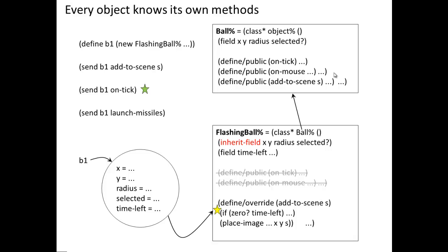If I send that FlashingBall an on-tick message, it will observe that there is no on-tick defined in FlashingBall, so it will continue to look for the on-tick method. It will go up possibly a whole chain of inheritances until it finds one.